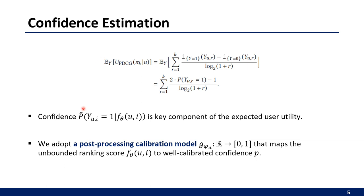We use the post-processing calibration model G that maps the unbounded ranking score to well-calibrated confidence.